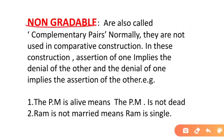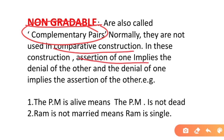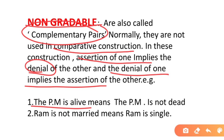Non-gradable antonymy refers to pairs where one implies the negation of the other. For example, 'The PM is alive' also means 'The PM is not dead.' And 'Ram is not married' means 'Ram is single.'